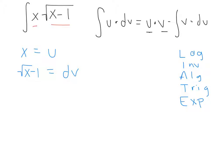And so then from dv, we would find v by taking the integral of both sides so that v is going to be equal to 2 thirds x minus 1 to the 3 halves.